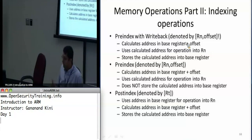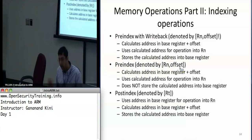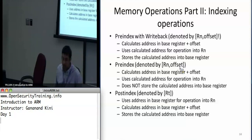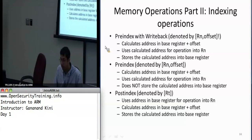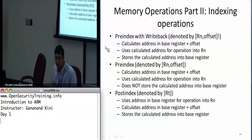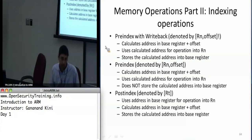The earlier example was something called pre-indexing, where you just have the register followed by an offset — the offset can be zero or left out. Essentially it takes that offset, adds it to the base address, and then uses the resulting address for the operation, whether it's a load or a store. There are two more addressing modes. Pre-index with writeback puts an exclamation mark at the end of the square brackets, meaning take the newly calculated address and store it back into the base address register. After the load or store, the register will contain the base address plus the offset.